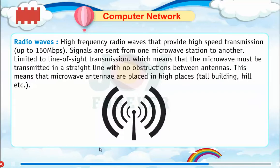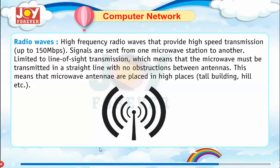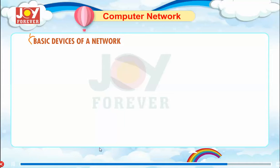Radio waves: high frequency radio waves provide high-speed transmission up to 150 Mbps. Signals are sent from one microwave station to another and are limited to line-of-sight transmission, meaning the microwave must be transmitted in a straight line with no obstructions between antennas. This means microwave antennas are placed in higher places.